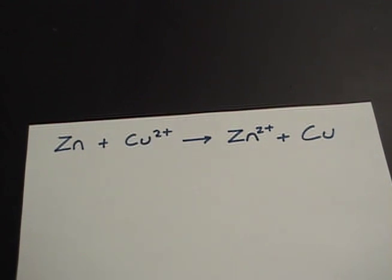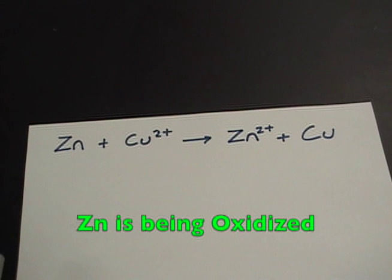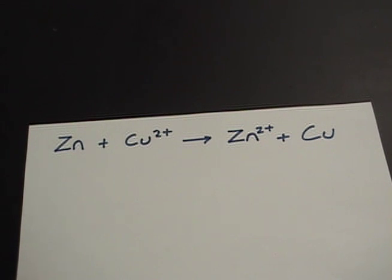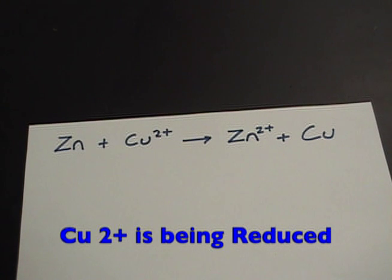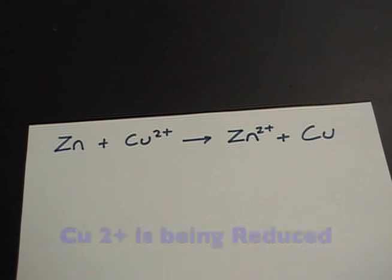This tells us that zinc is being oxidized because it lost two electrons, and that copper is being reduced since it is less positive than it was before, thus gaining electrons.